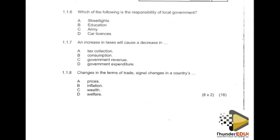The first option is street lights — that is the correct one. Education is far from local government. Army is far. Car licences is far. So in this regard our correct answer is A.